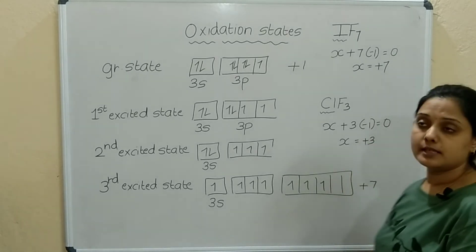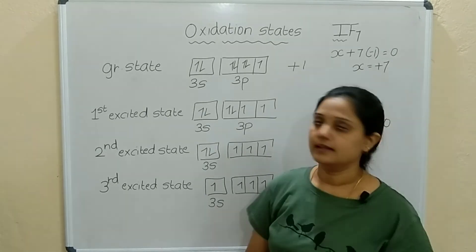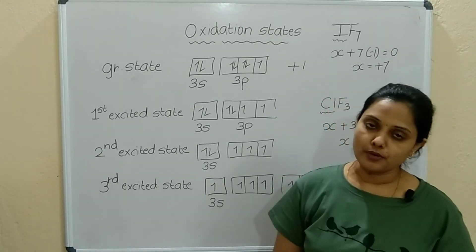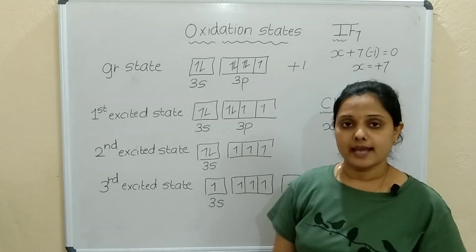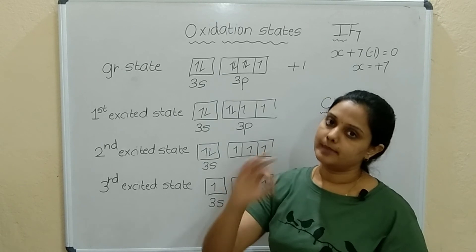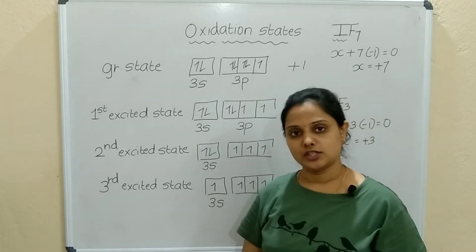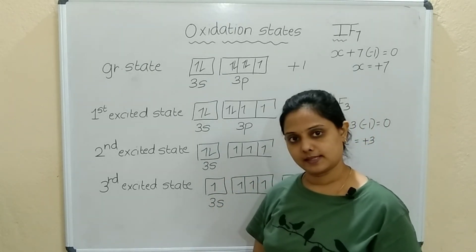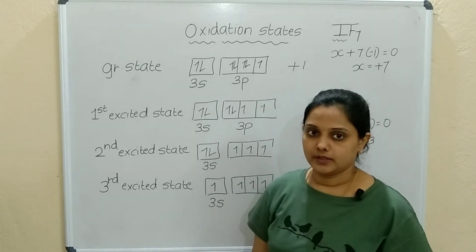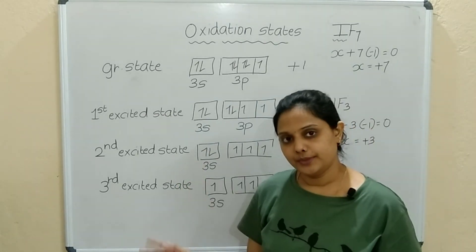These two examples prove that elements other than fluorine — Chlorine, Bromine, and Iodine — can show plus 1, plus 3, plus 5, and plus 7 oxidation states. Hope this topic is clear to you.